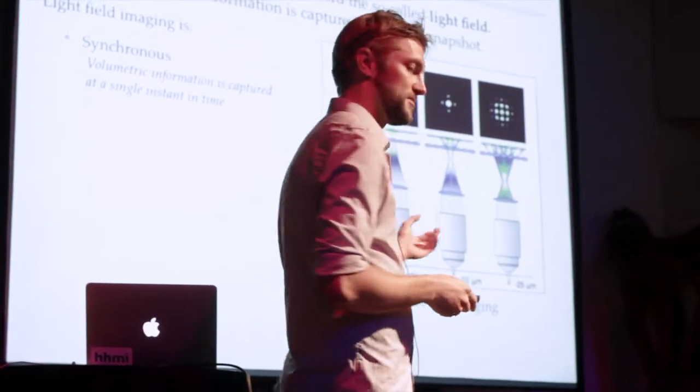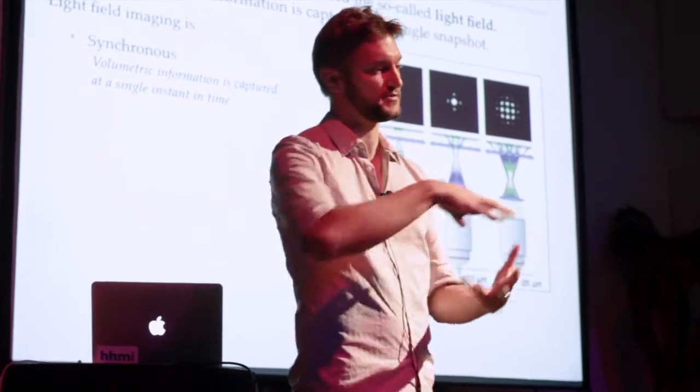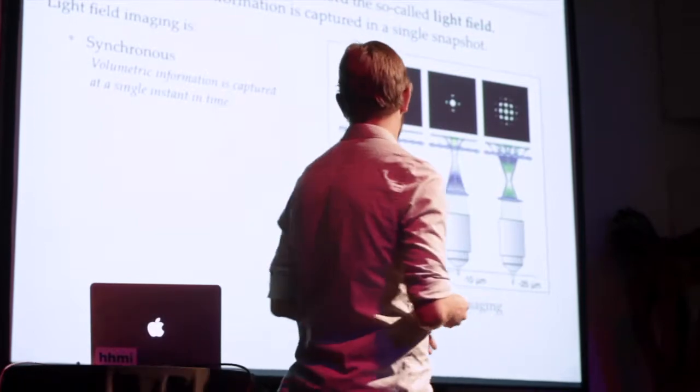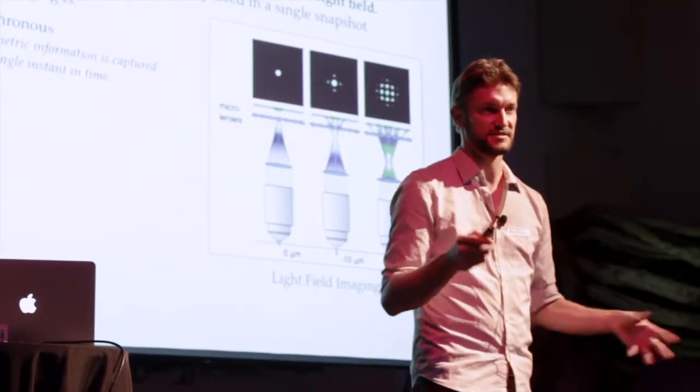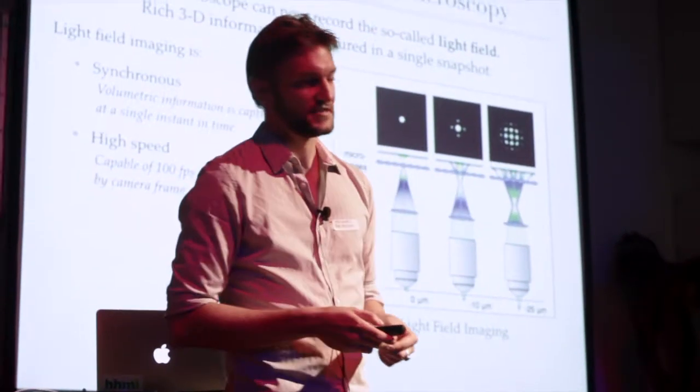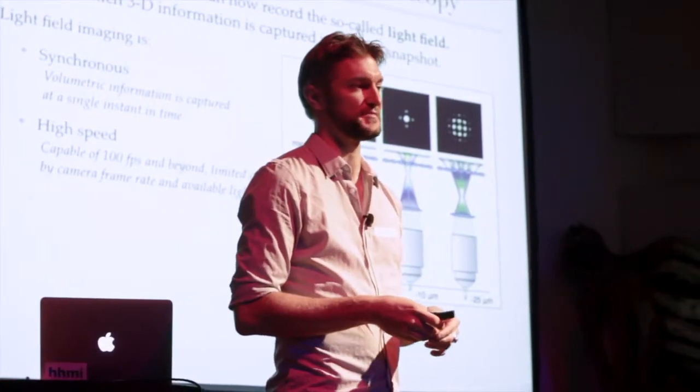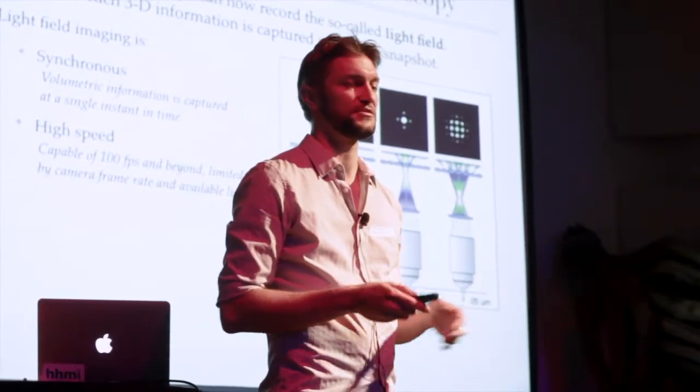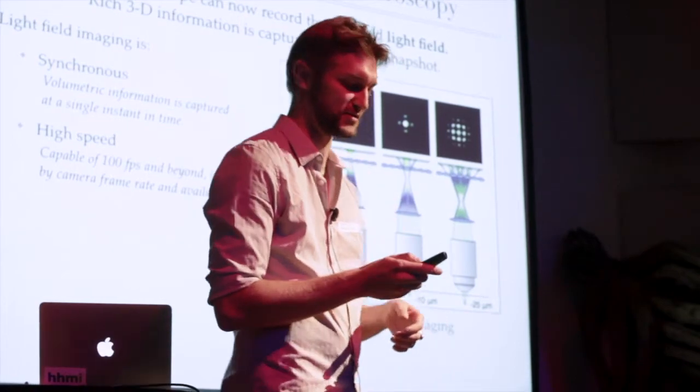So there are a number of advantages to recording the volume this way. One of them and probably one of the most important ones is that this is a synchronous imaging method, meaning that the entire three-dimensional volume is captured at once in a single snapshot. And so you're literally seeing all these different neurons at the same instant in time. Another advantage of this method is that it's very high speed. It basically can go as fast as your camera can go, so up to 100 hertz or even higher if you have a high-speed camera. And it's really limited only by the available light that you can afford to have coming out of your sample.